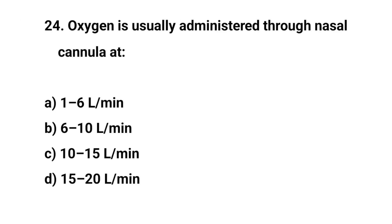Question No. 24. Oxygen is usually administered through a nasal cannula at? The right answer is A: 1 to 6 litres per minute.